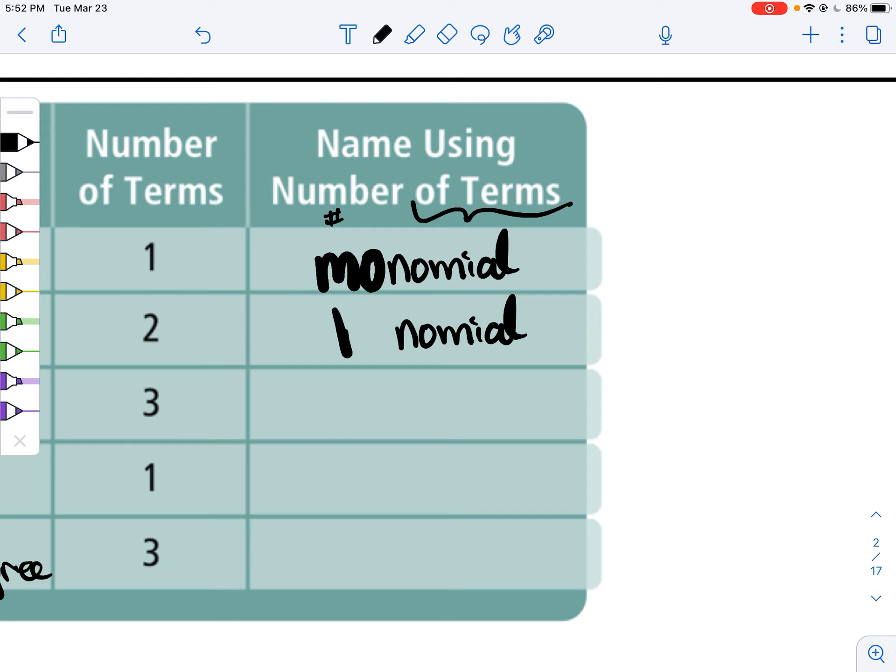If we have two, that's a binomial, like a bicycle. If your bicycle suddenly has three wheels, that becomes a tricycle. So, three numbers is a trinomial.